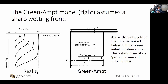In the Green-Ampt method it is simplified: as soon as infiltration starts, you've got a piece of it that is fully saturated, and then you have a piece that has an initial moisture content. You can imagine this whole thing is like a piston that's moving downward.